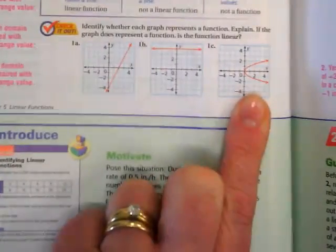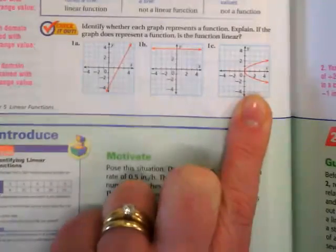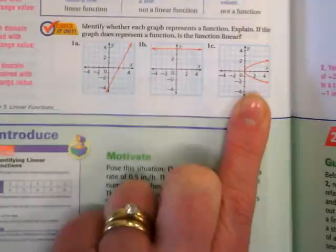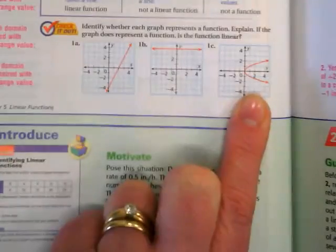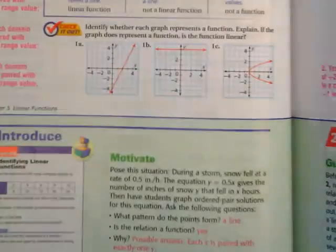What about this one? Does not pass the vertical line test, so we don't even ask if it's a straight line or not, which it's not. It's not a function or a linear function, so you would just put no. Thumbs up if that makes sense. Excellent.